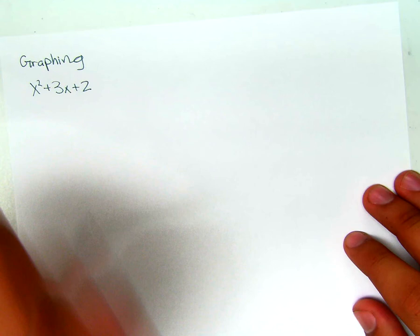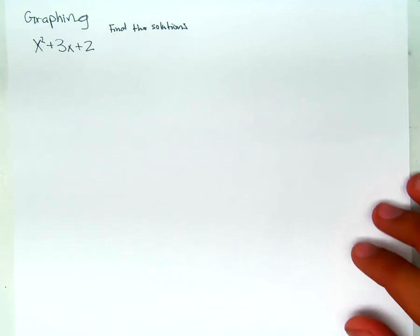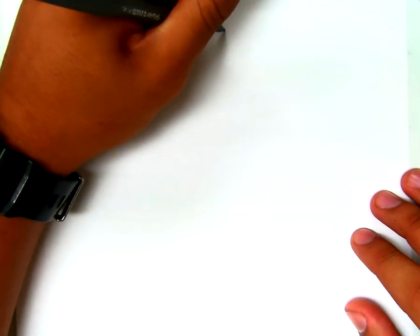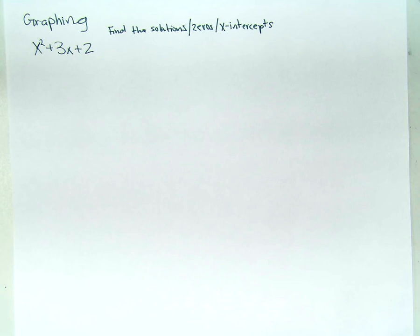The first method is solving by graphing. If we're given the equation x squared plus 3x plus 2 and asked to find the solutions, the zeros, or the x-intercepts, that all means the same thing. What we want to do is plug these terms into a calculator — I'm going to grab one.